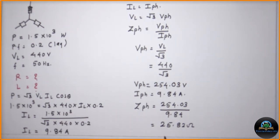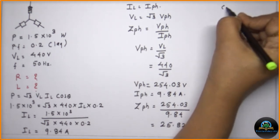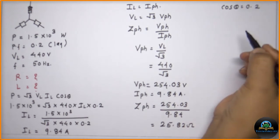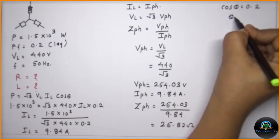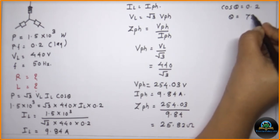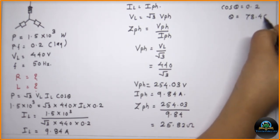Now they have given you the cos theta which is equal to 0.2, and definitely it is a lagging power factor. From that we can calculate the value of theta which is equal to 78.46 degrees.